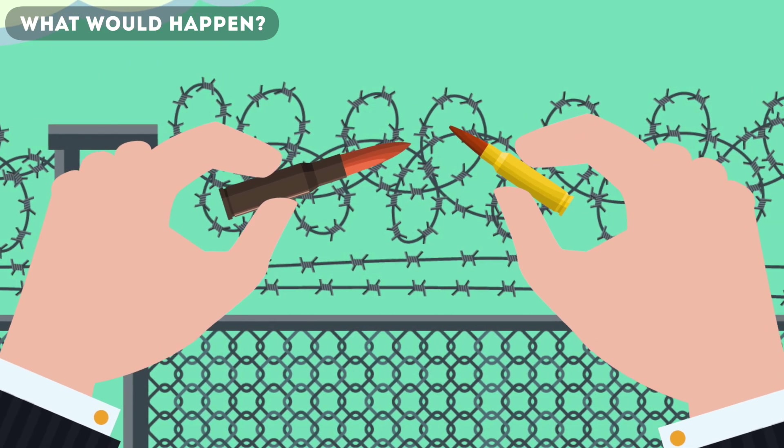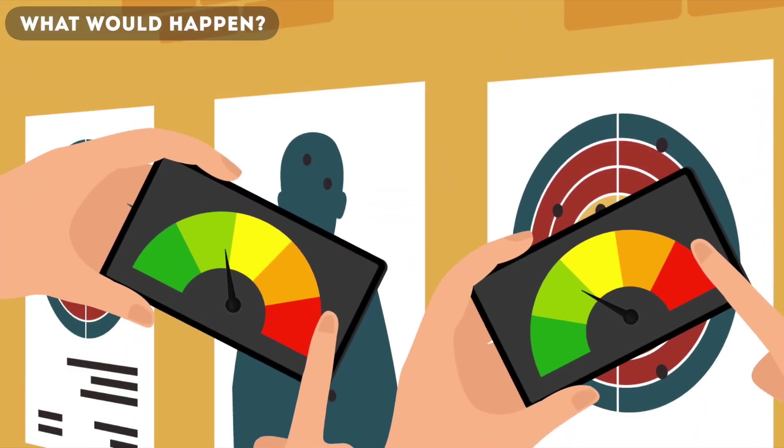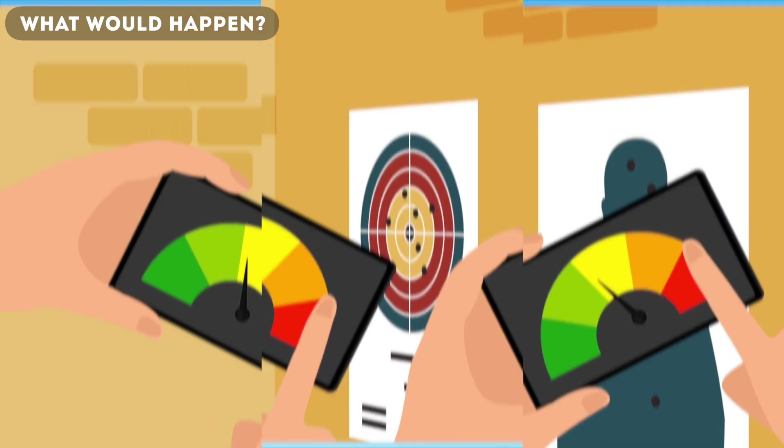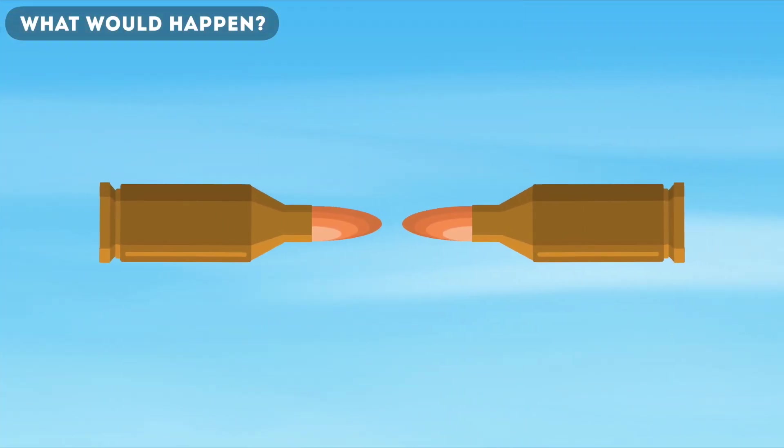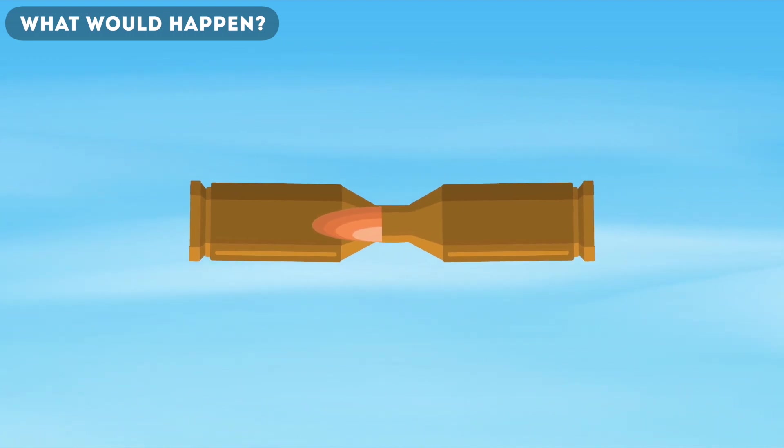But now let's look at the second, more realistic case. In this case, let's say the weight of the two bullets are the same, but the velocities are different. This means that one bullet would be going faster than the other. If that were to happen, the bullets would splinter directly into each other.